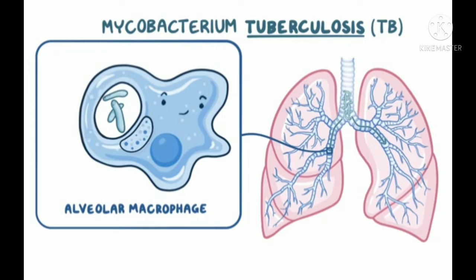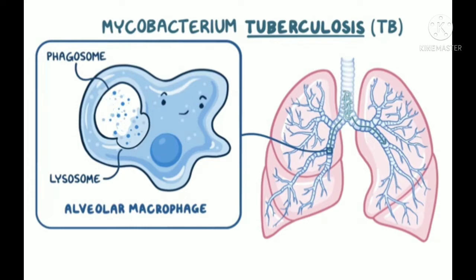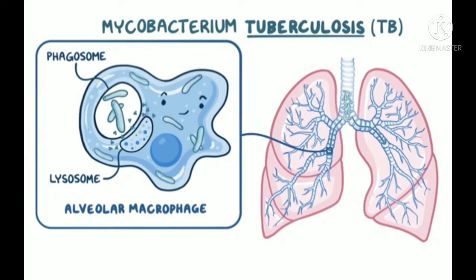The macrophage packages the bacteria into a space called a phagosome. In most cases, the macrophage then fuses the phagosome with a lysosome, which has hydrolytic enzymes that can break down virtually any biochemical molecule. TB is tricky though — once inside the macrophage, it produces a protein that inhibits this fusion, which allows the mycobacterium to survive, proliferate, and create a localized infection.